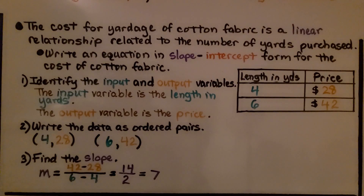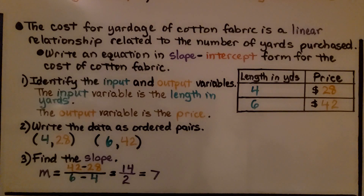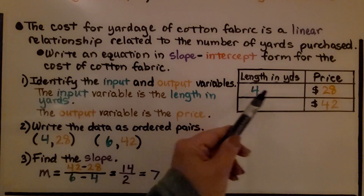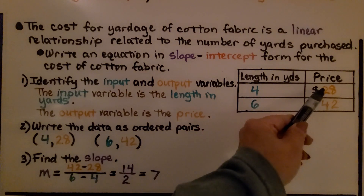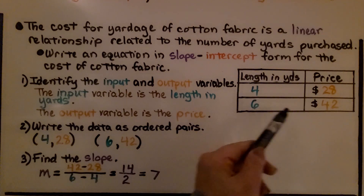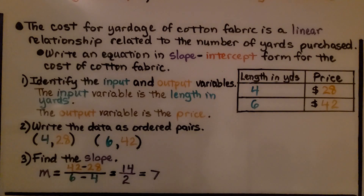The cost for yardage of cotton fabric is a linear relationship related to the number of yards purchased. Write an equation in slope-intercept form for the cost of cotton fabric. For 4 yards the price would be $28, and for 6 yards it would be $42.